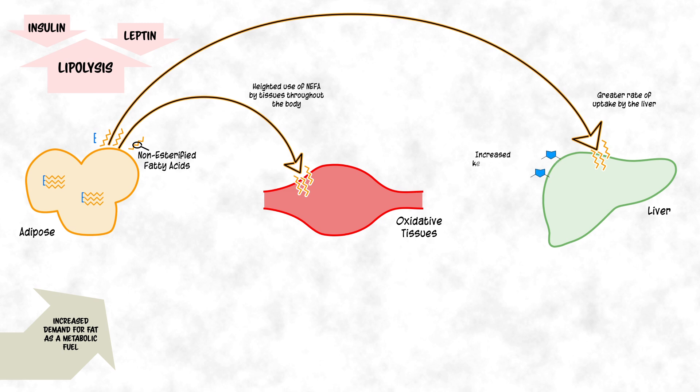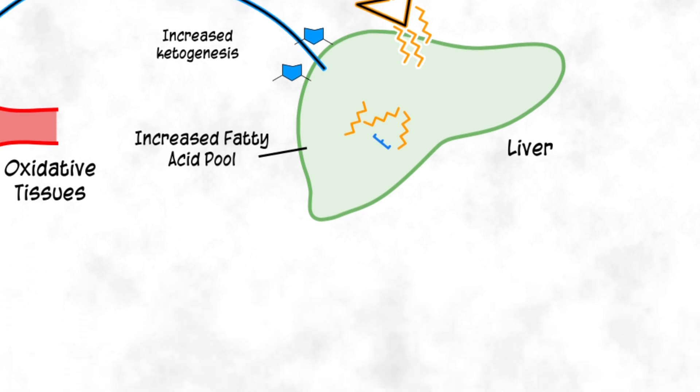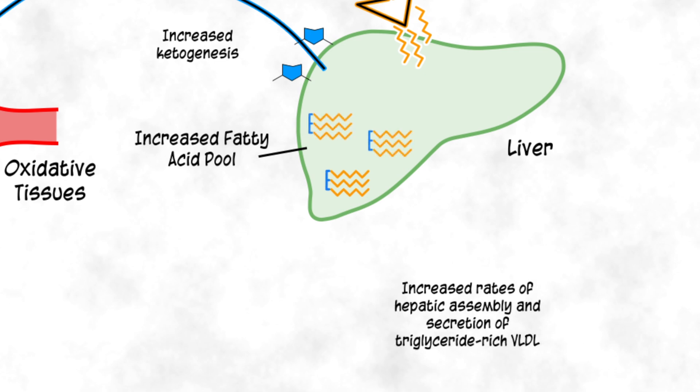An increase of ketogenesis occurs for production of ketone bodies. However, under these conditions, the model posits there is a likewise greater rate in synthesis of triglycerides from the increased fatty acid pool within liver cells. Increased rates of triglyceride synthesis in the liver leads to increased rates of hepatic assembly and secretion of triglyceride-rich VLDL.